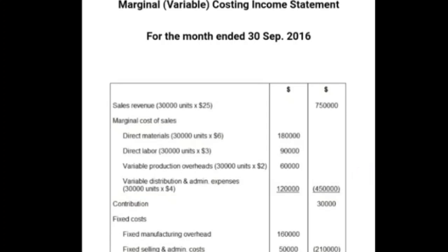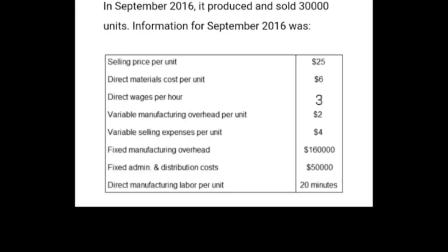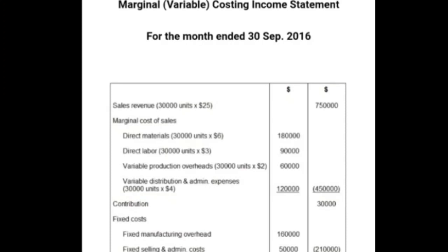Deducting the total variable costs of $450,000 from sales revenue of $750,000 gives a contribution of $300,000. Deducting all fixed costs from this contribution gives a net profit of $90,000.